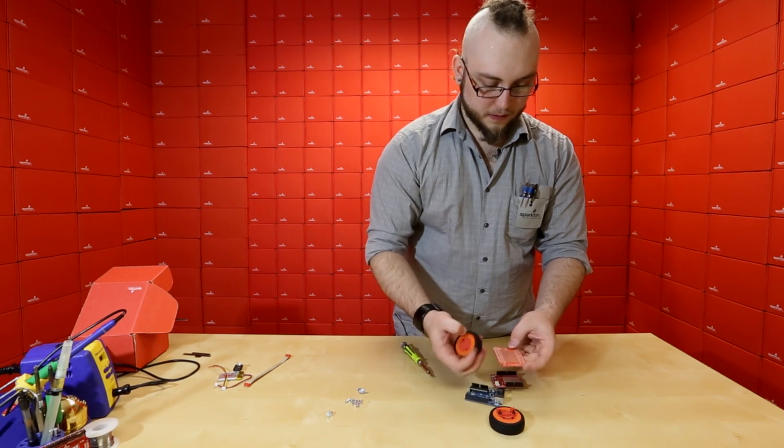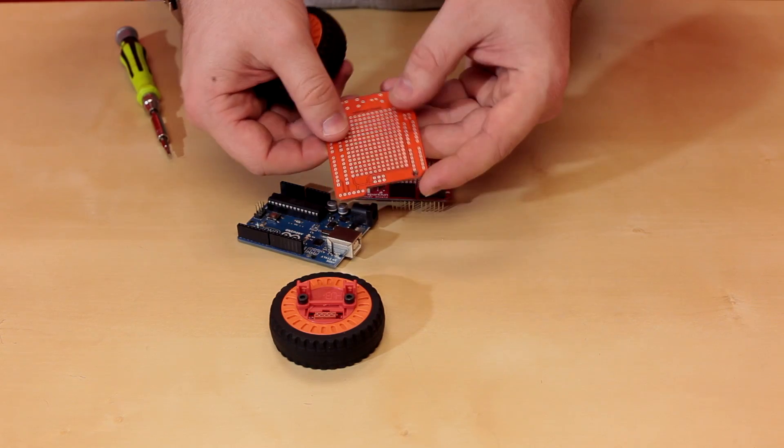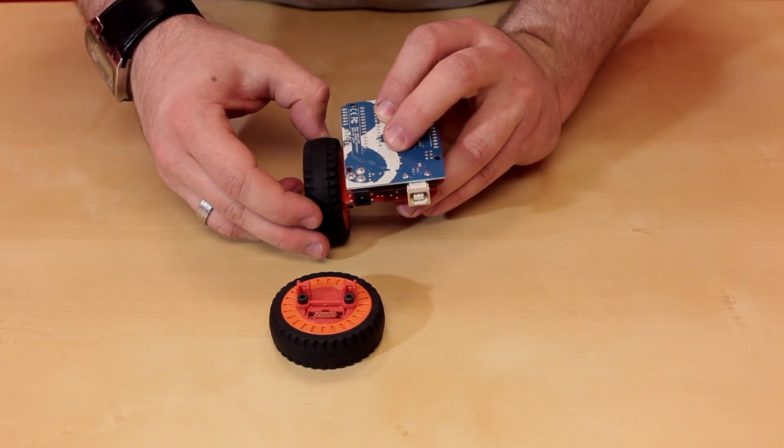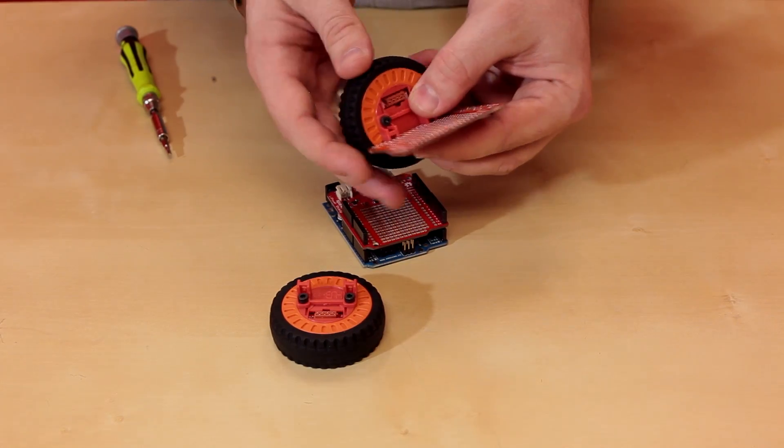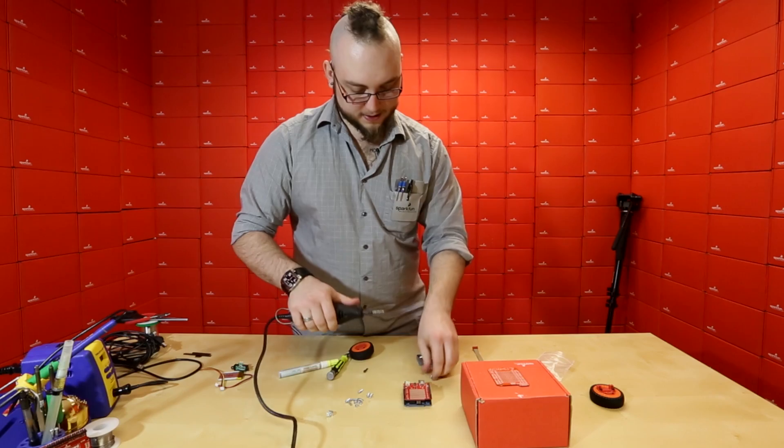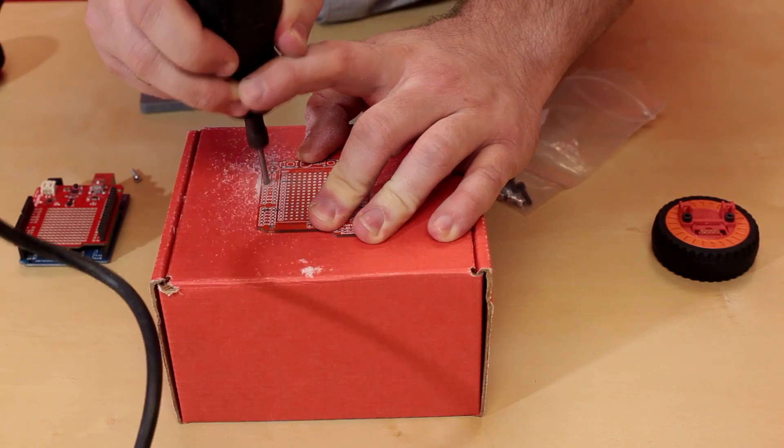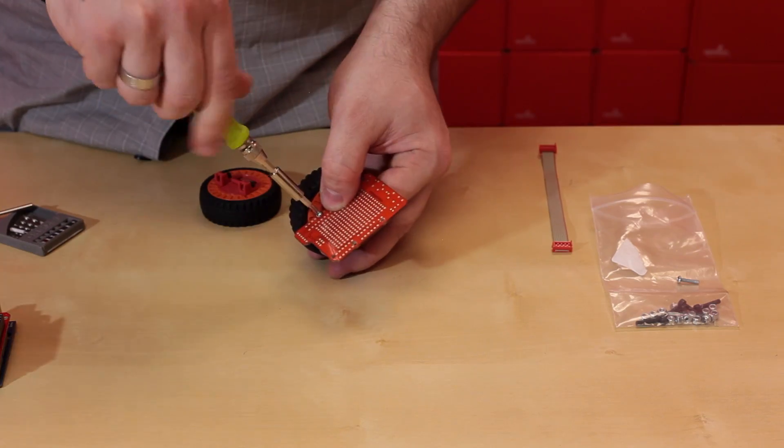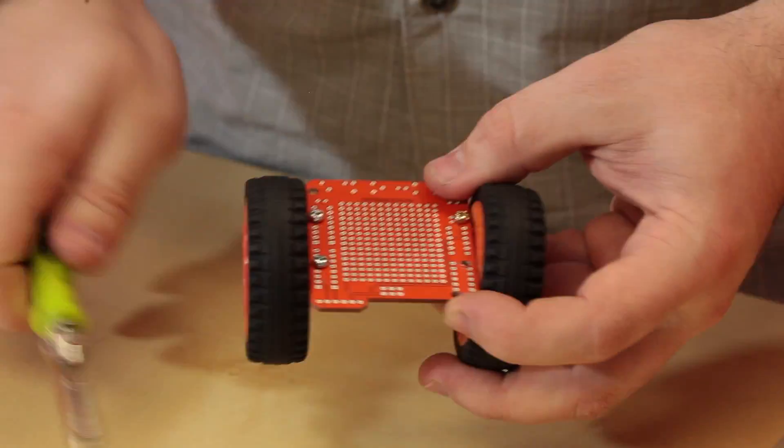First thing I'm doing is just sort of mocking things up and seeing how everything's going to fit together, trying to figure out where I'm going to screw the wheels to the proto shield. I'm just going to mark where I want to drill holes. Next I will drill the holes in the proto shield where I marked them out so that I can actually put some bolts through the shield and actually attach the wheels to the robot.